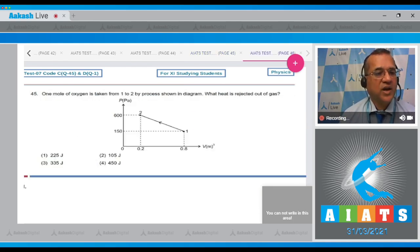Question number 45: One mole of oxygen is taken from 1 to 2 by the process shown in the diagram. What heat is rejected out of the gas? We're going from 1 to 2.